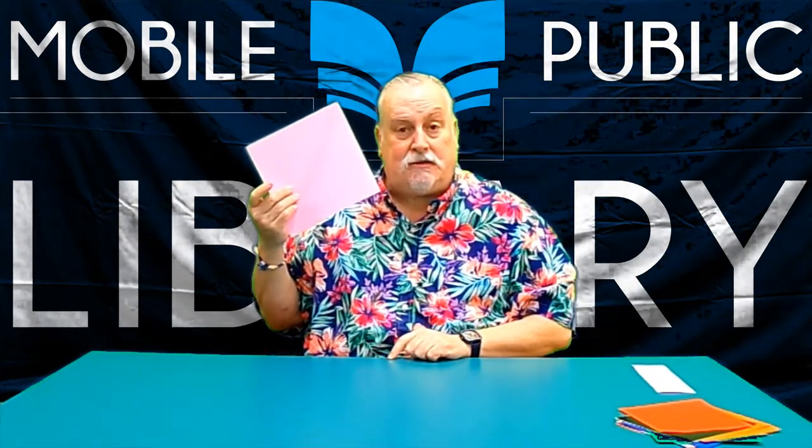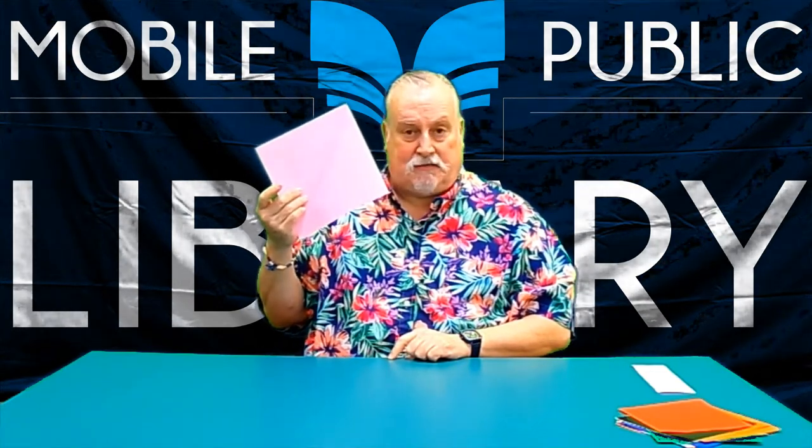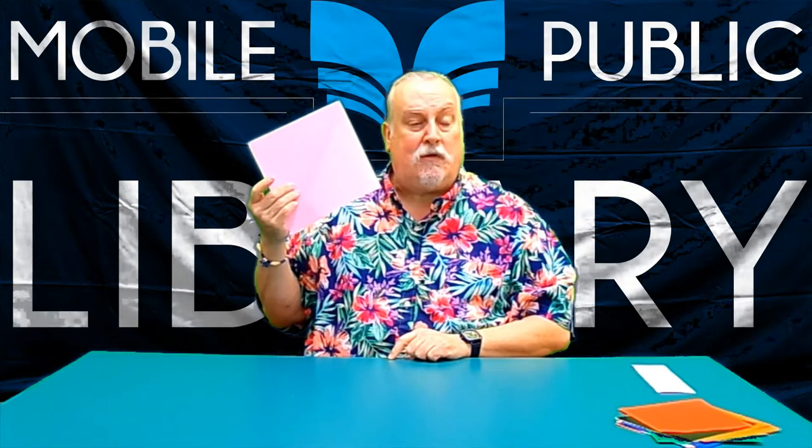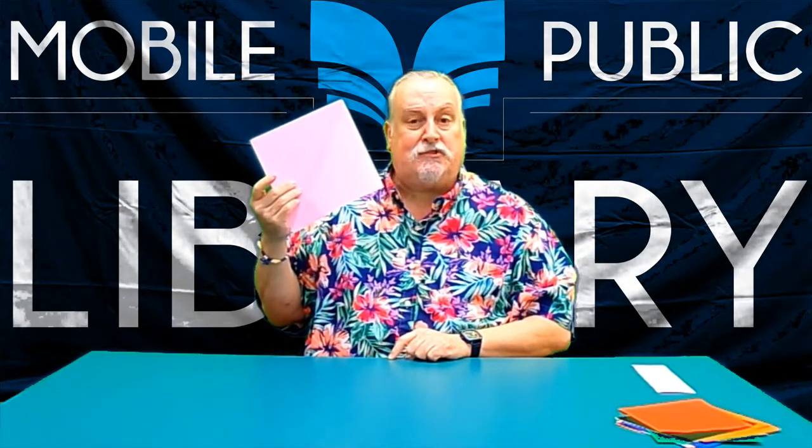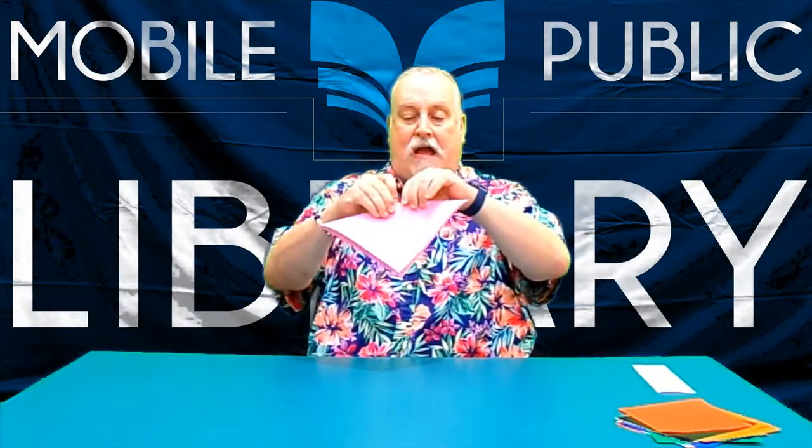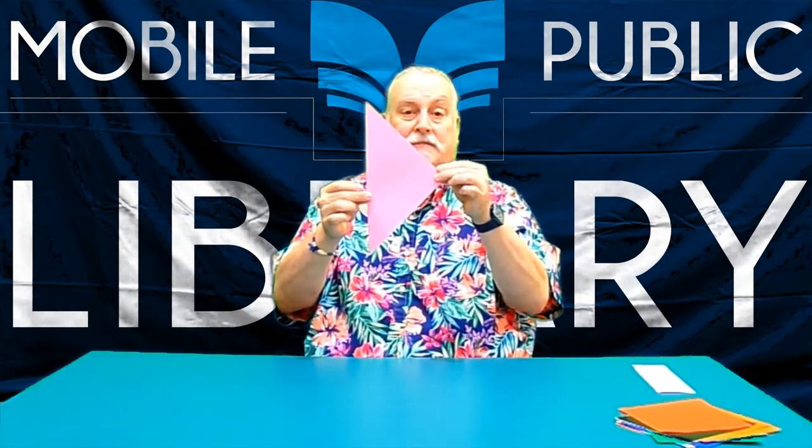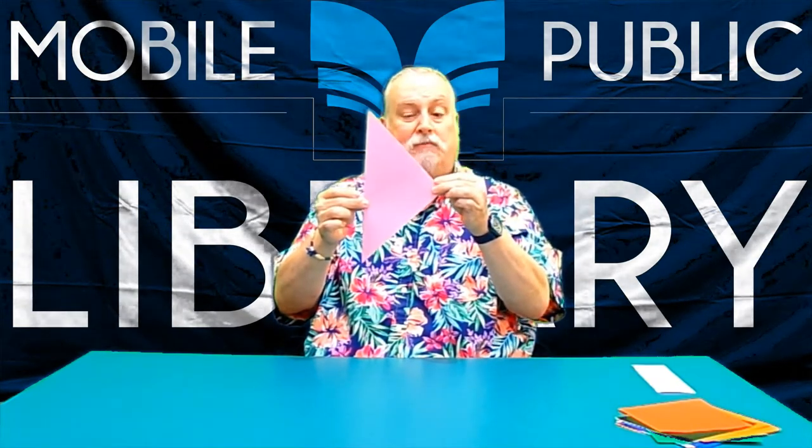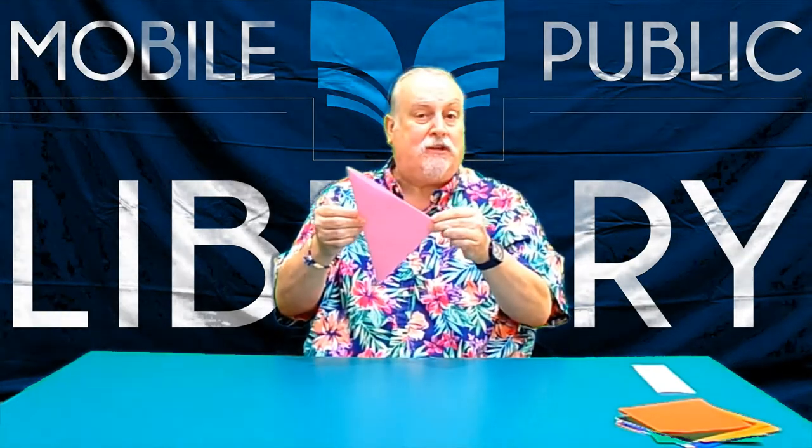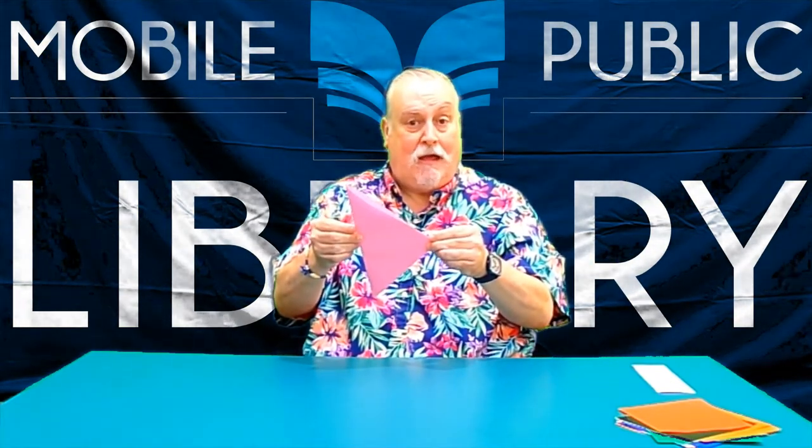The first thing I'm going to teach you how to do is called the bird base. Many pieces of origami start with that particular piece. So we're going to start with the bird base. The first thing we're going to do is we're going to fold it in half. So you've got a triangle. All right. When we come back, I'm going to have the camera move so that you can't see me, but you can see my hands so that hopefully you will understand what I'm doing and talking about. So I'll be back in a minute.